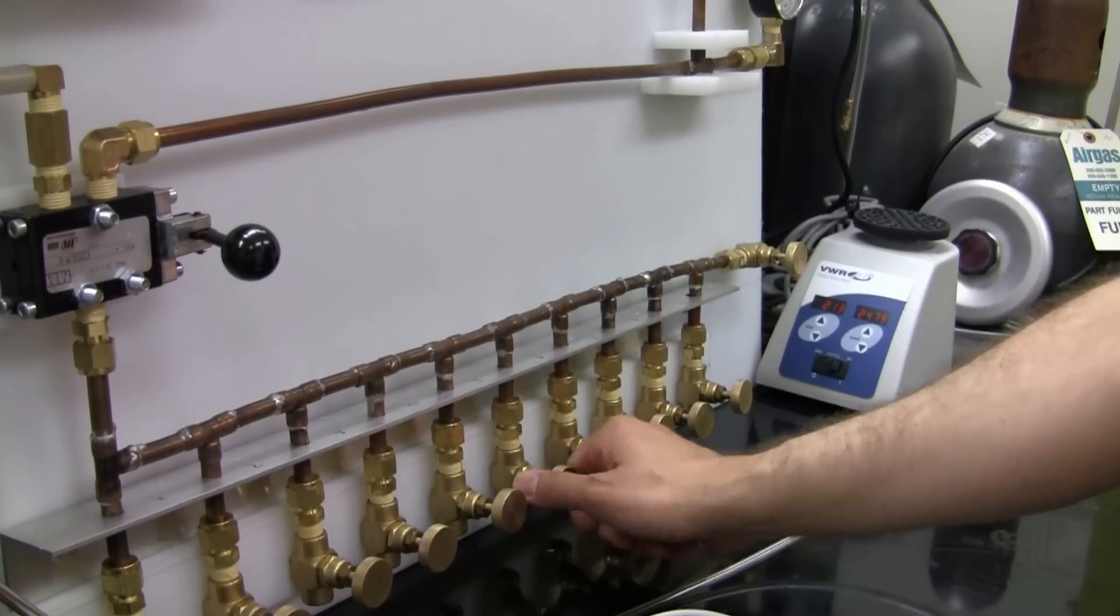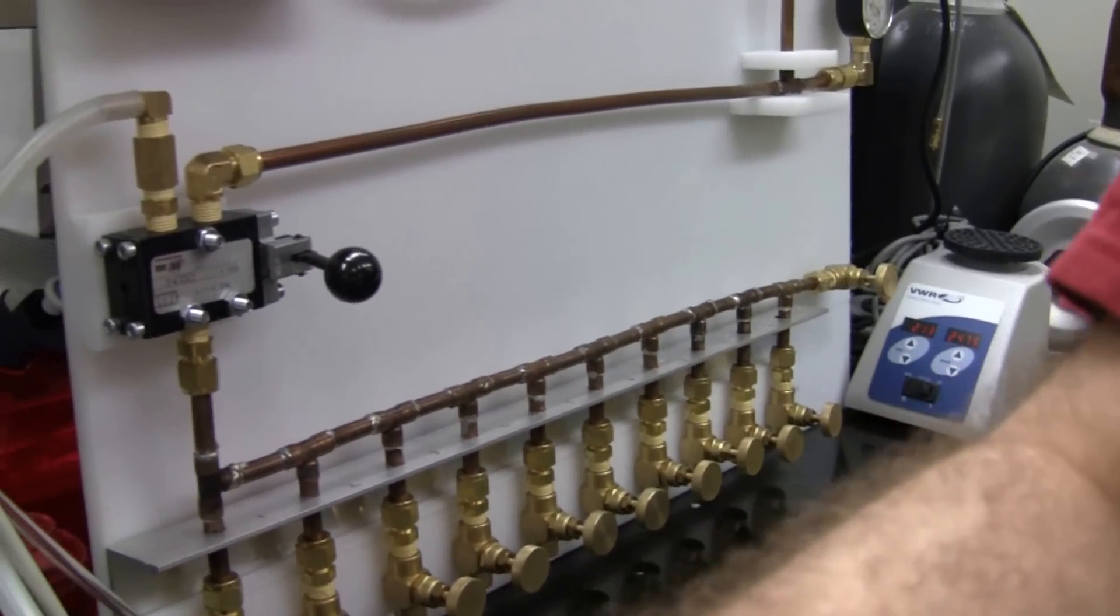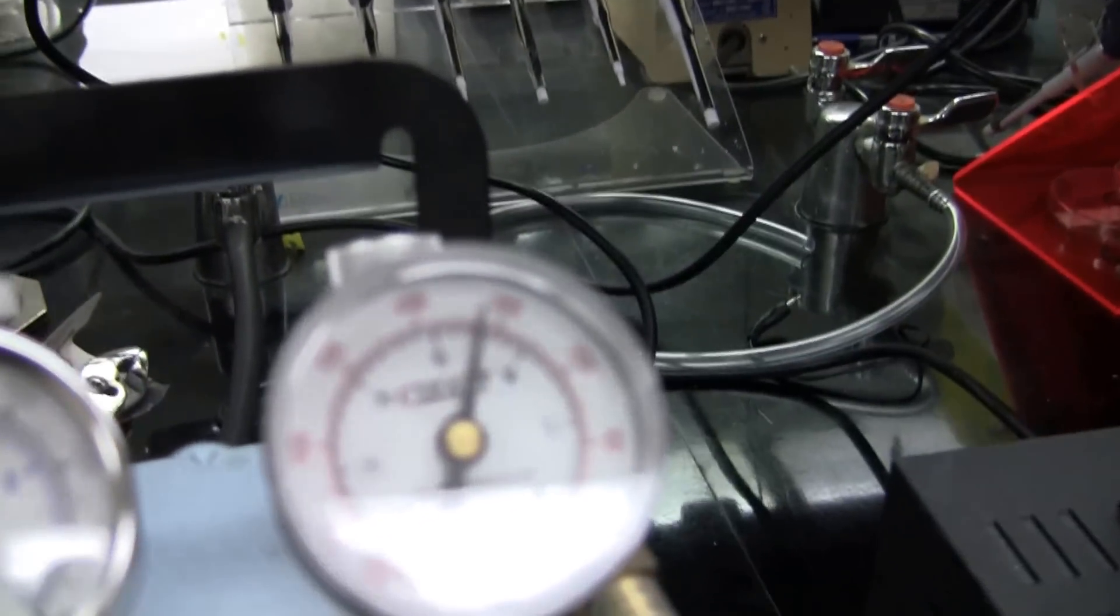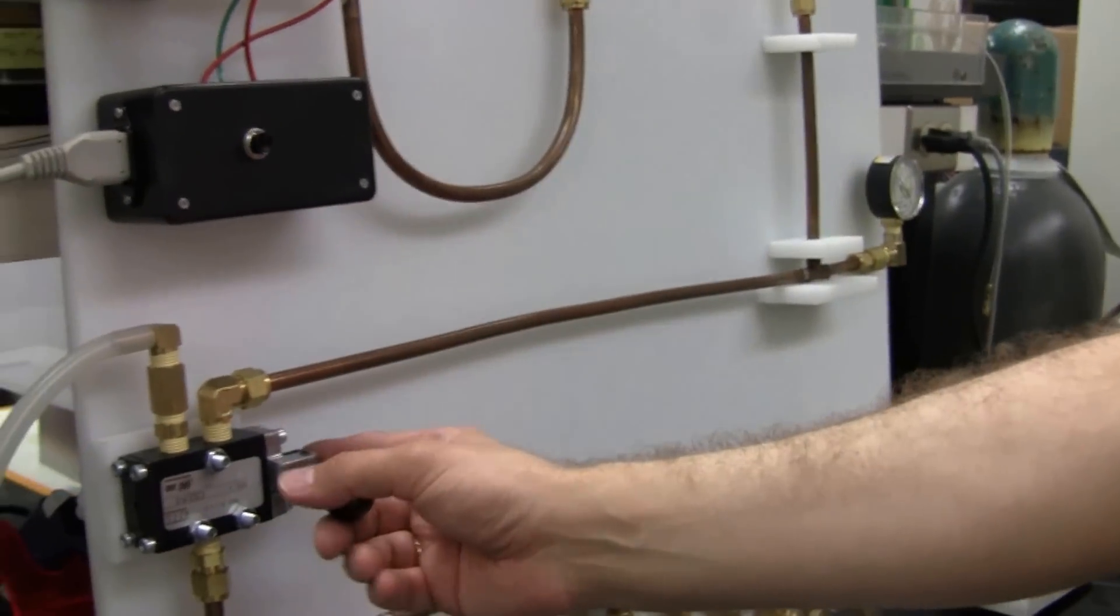So, again, once the system is equilibrated, you will notice here that the pressure reaches maximum attainable on the vacuum pump. And then you can repeat the process.